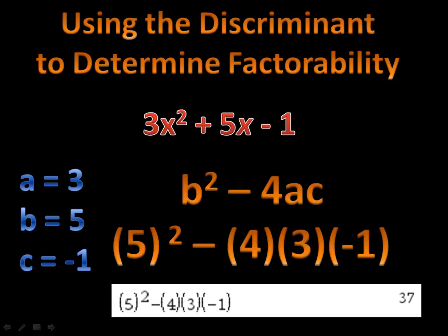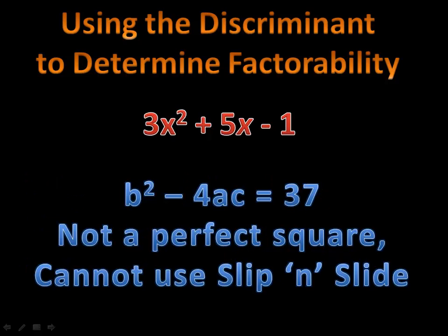In our example here, we put those numbers into our calculator and found out that the discriminant, b squared minus 4ac, is 37. Since it's not a perfect square, we cannot use slip and slide. You can look for a greatest common factor, but there's not much else you can do there.